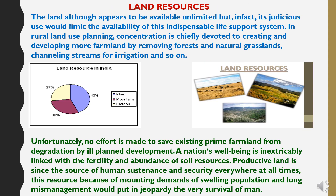Now to study land resources. Although land appears to be available in unlimited quantity, its judicious use would limit the availability of this indispensable life support system. In rural land use planning, concentration is chiefly devoted to creating and developing more farmland by removing forests and natural grasslands, channelling streams and irrigation, and so on. Unfortunately, no effort is made to save existing prime farmland from degradation by ill-planned development. A nation's well-being is inextricably linked with the fertility and abundance of soil resources, and productive land is the source of human sustenance and security everywhere.